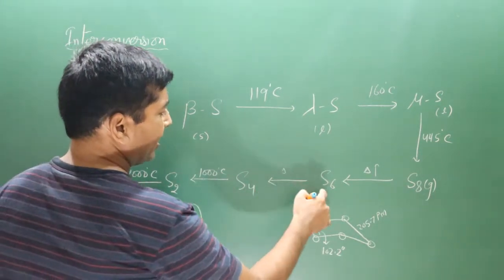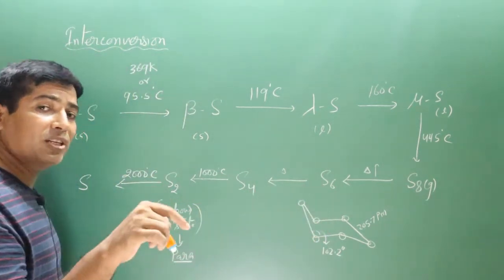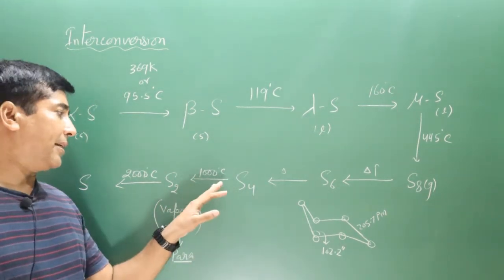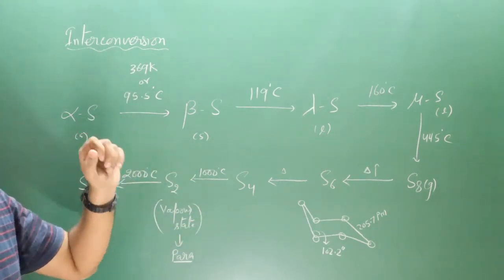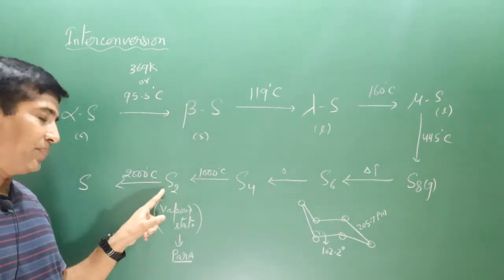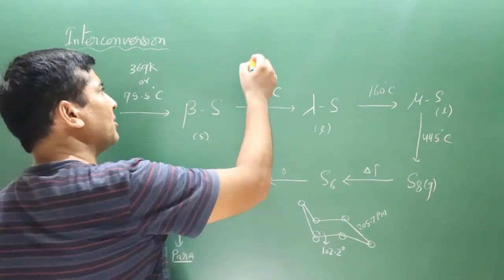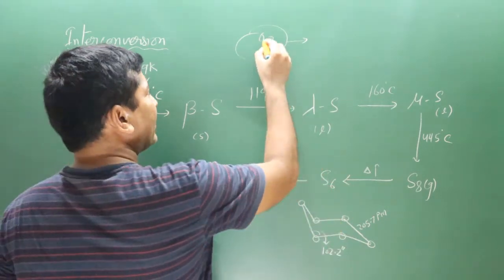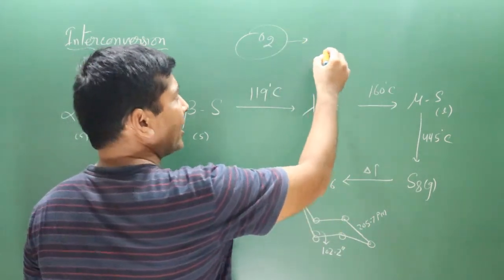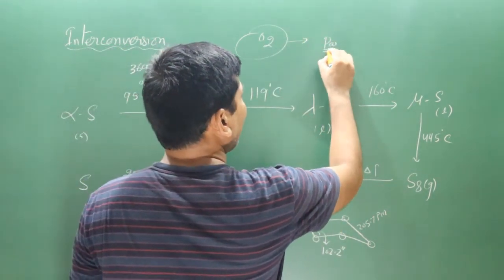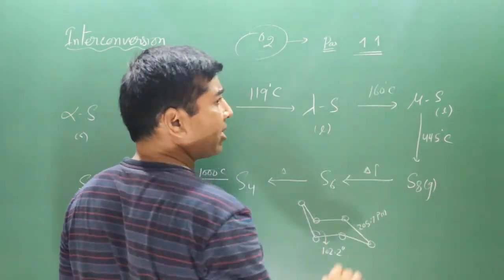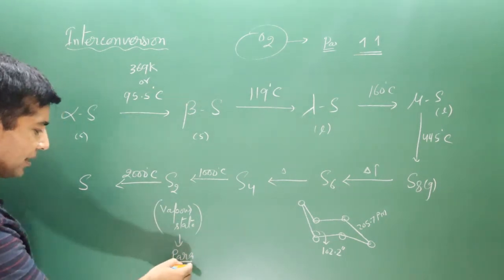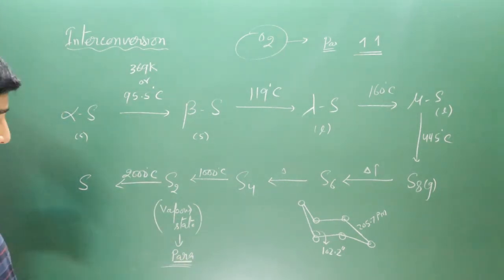When we increase the temperature further, S6 converts into tetrasulfur S4. When tetrasulfur is heated at 1000 degrees Celsius, it becomes disulfur S2 — similar to the diatomic oxygen molecule O2. Just as oxygen gas is paramagnetic because it has two unpaired electrons in anti-bonding pi orbitals, S2 is also paramagnetic by nature because it has unpaired electrons.